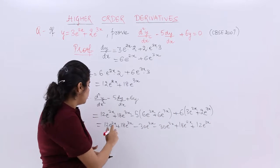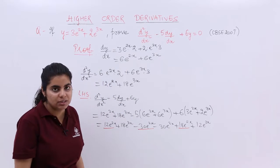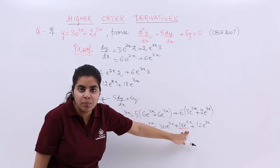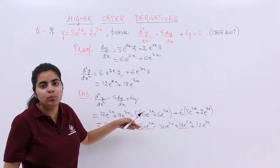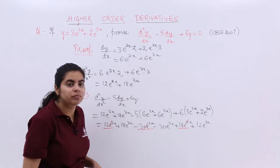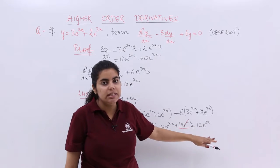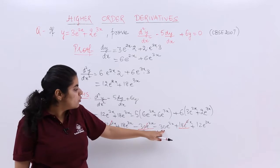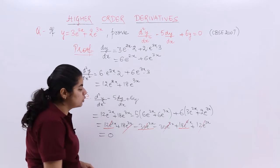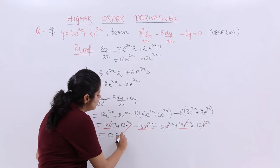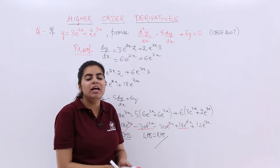Now you have e^(2x) terms: 12 and 18 being positive make 30e^(2x), which cancels with minus 30e^(2x). Similarly, 18e^(3x) and 12e^(3x) add to 30e^(3x), which cancels with minus 30e^(3x). So basically everything cancels, giving 0. And 0 was what we needed to prove — this was the RHS. So LHS equals RHS. Hence, we have proved this question.